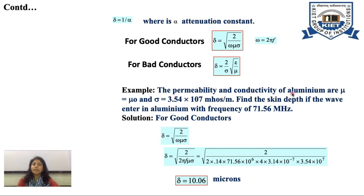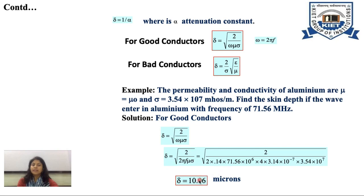For good conductors, delta equals square root of 2 over omega mu sigma, where omega equals 2 pi f. For bad conductors, delta equals (2/sigma) times square root of epsilon over mu. For example, for aluminium with mu equals mu naught and sigma equals 3.54 times 10 to the power 7 mho per meter, find the skin depth if the wave enters aluminium at a frequency of 71.56 MHz. Since aluminium is a good conductor, using delta equals square root of 2 over omega mu sigma, and substituting the values, the skin depth is 10.06 microns.